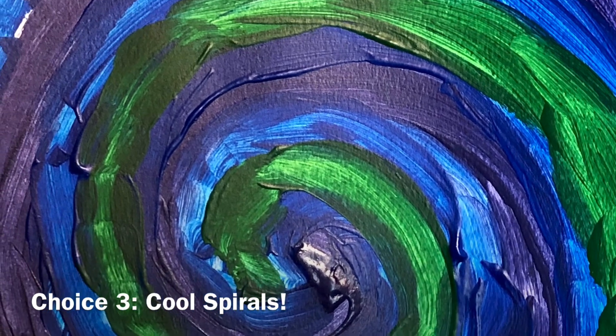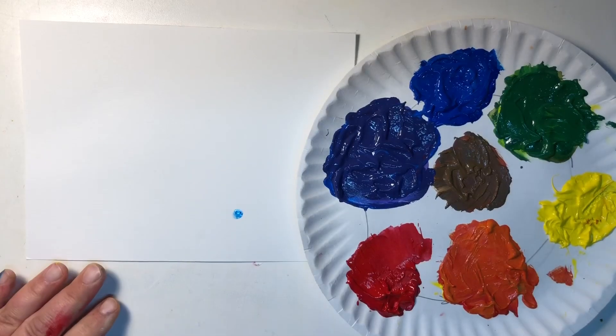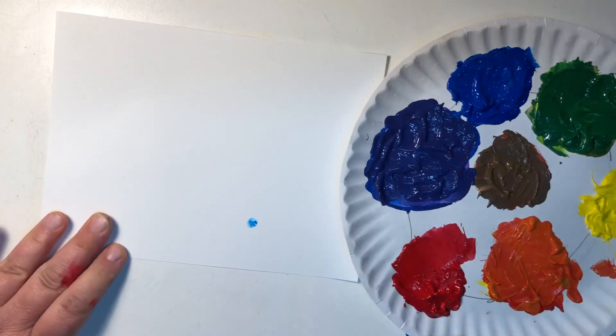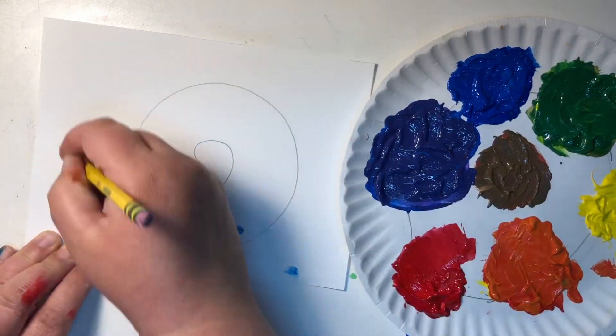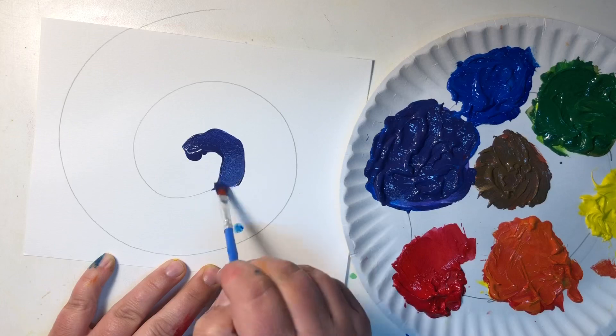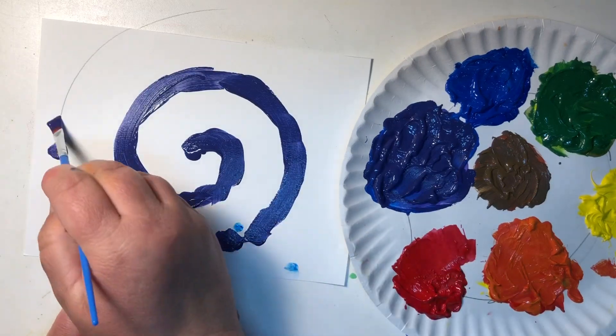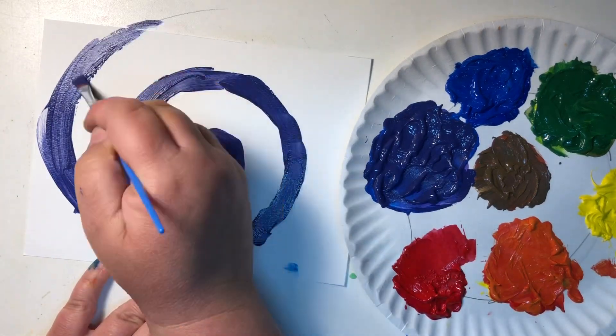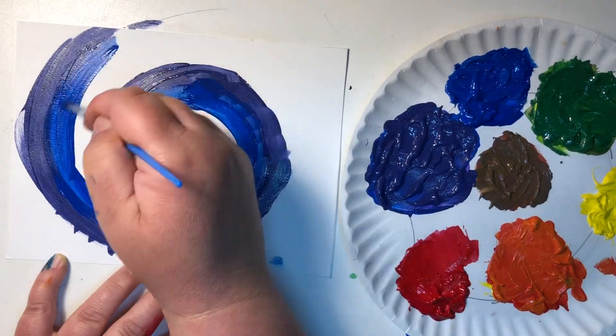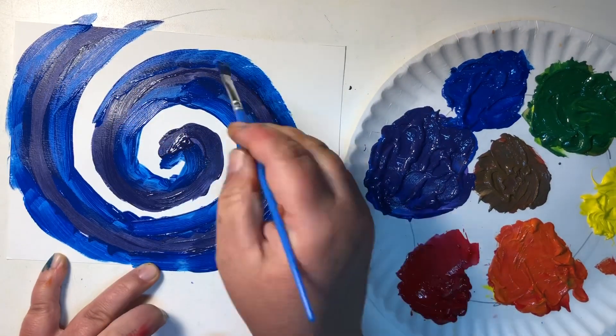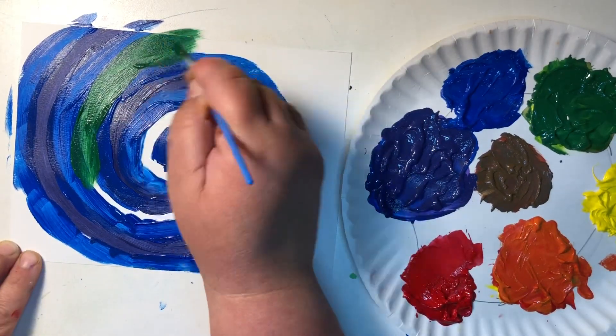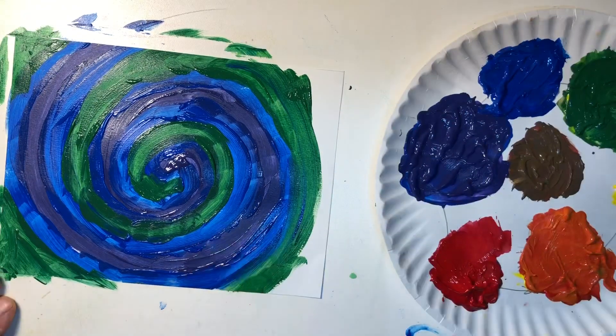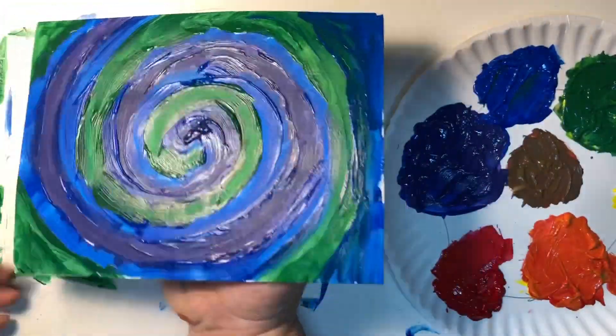Sometimes artists decide to limit the colors they use. For this one, we're going to use just our cool colors, which are purple, blue, and green. I started by drawing a wide spiral and painting it with the purple. After I was done with the purple, I sandwiched the purple with blue on both sides of that spiral. With the remaining white spaces, I covered it in green. Ooh, that's a cool-looking, cool painting!